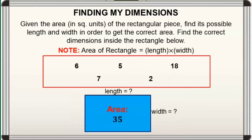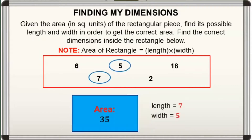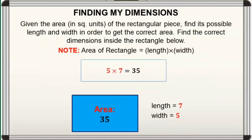For the second one — You got it! Length is equal to 7 and width is equal to 5. Dahil, pag-mi-multiply natin, 5 times 7 is 35.